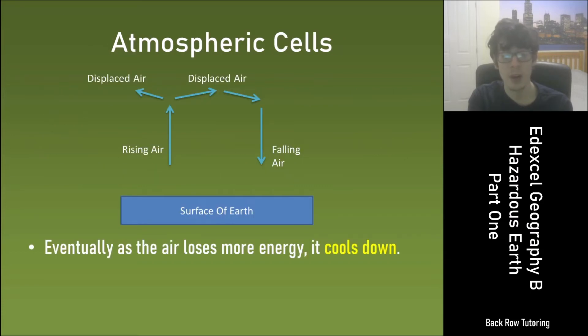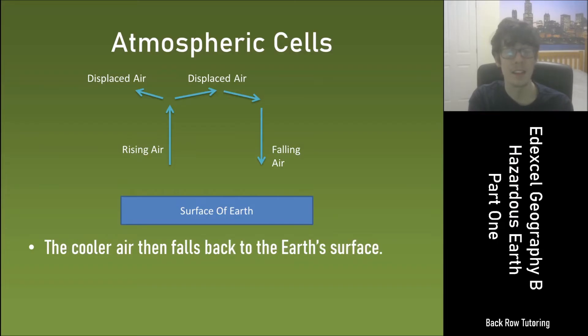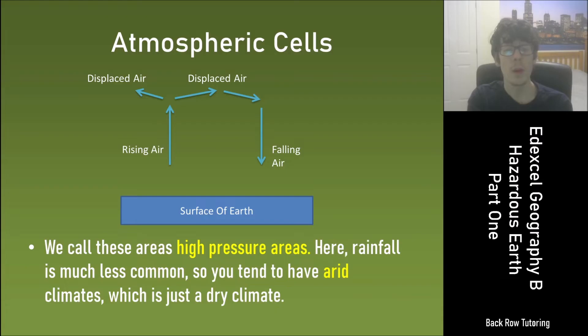Eventually as the air loses more energy it cools down. The cooler air then falls back to the Earth's surface. We call these areas high pressure areas. Here rainfall is much less common so you tend to have arid climates and arid is just another name for dry.